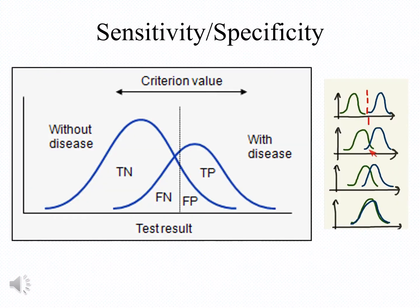The next slide shows the relationship between sensitivity and specificity of any test, including cancer biomarkers. You can see with the blue lines the distribution of tests in a patient population without the disease and in a population of patients who have the disease, and there is obviously an overlap. The dotted line shows what we call a cutoff — if you are less than the cutoff, the test is negative; if you are on the right side, the test is positive.